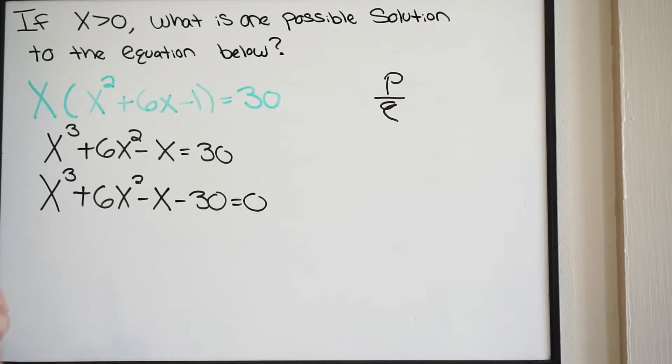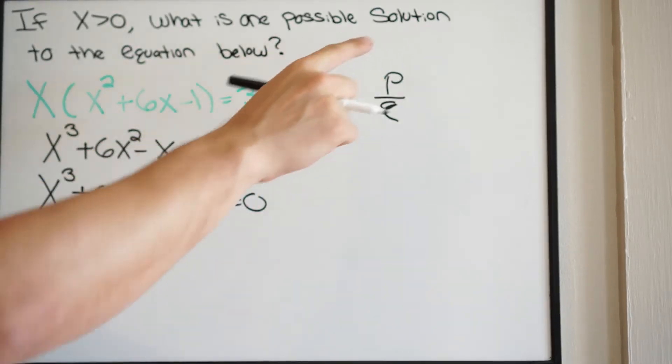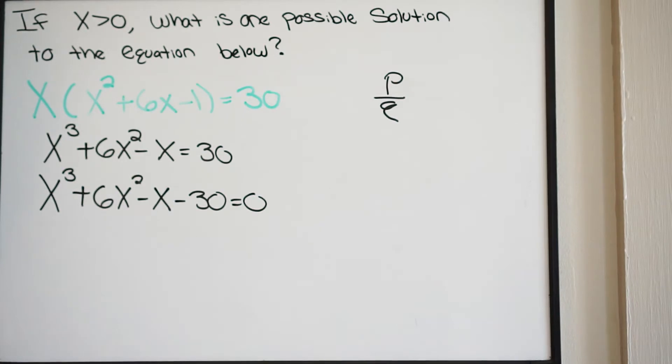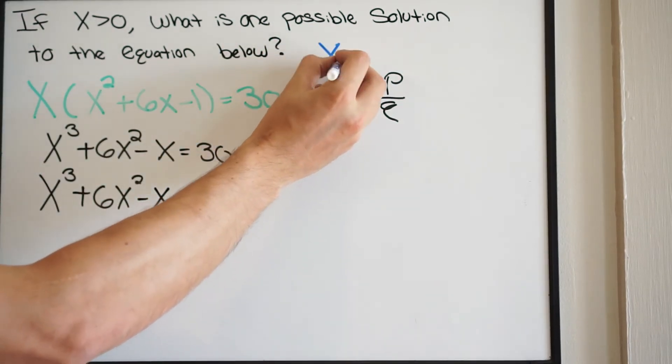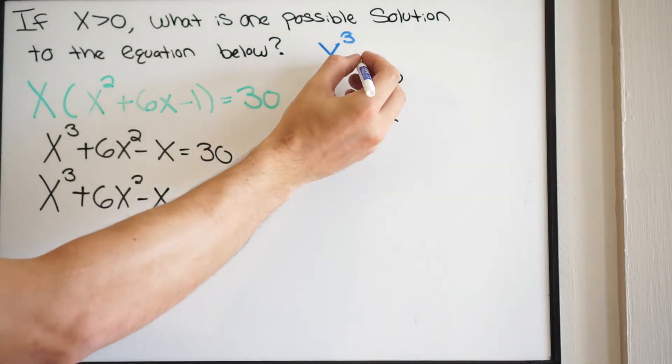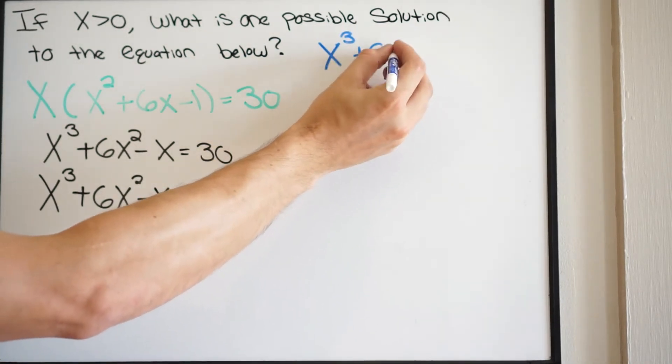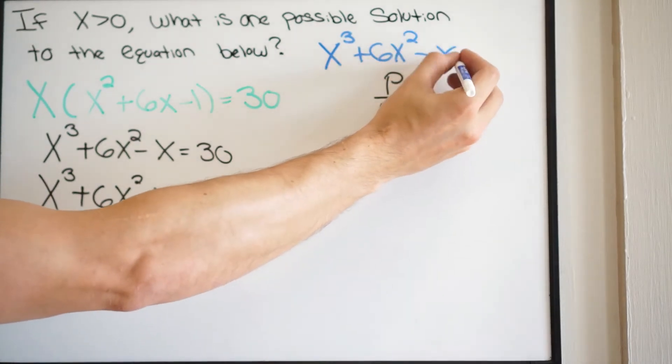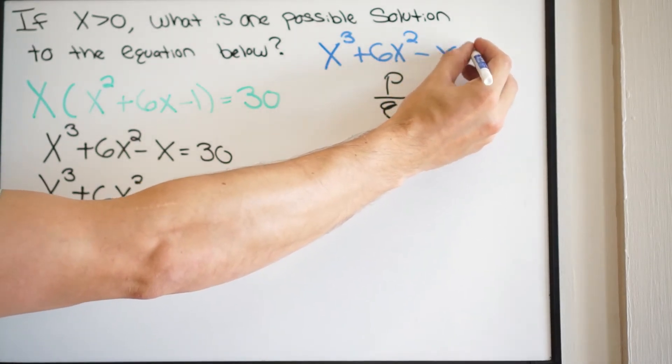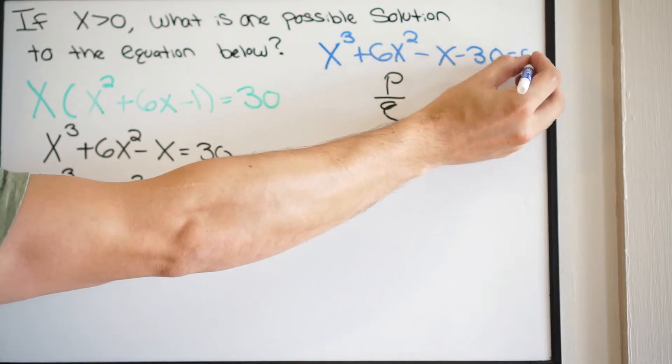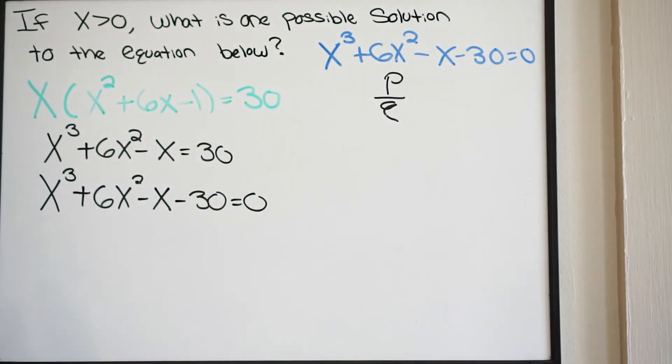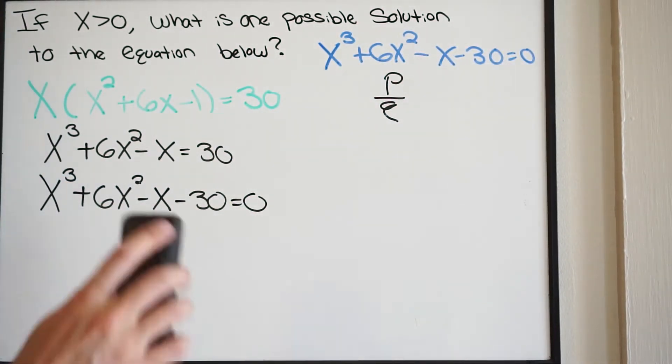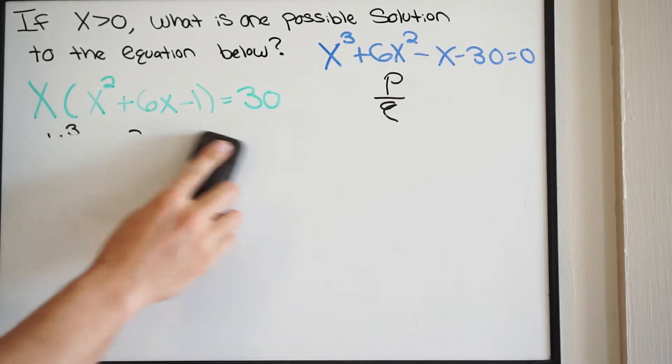Let's go ahead and set this up. What I'm going to do is take what we have here and rewrite it above so we have it to refer back to. We have x to the third plus 6x squared minus x minus 30. This is all equal to zero.